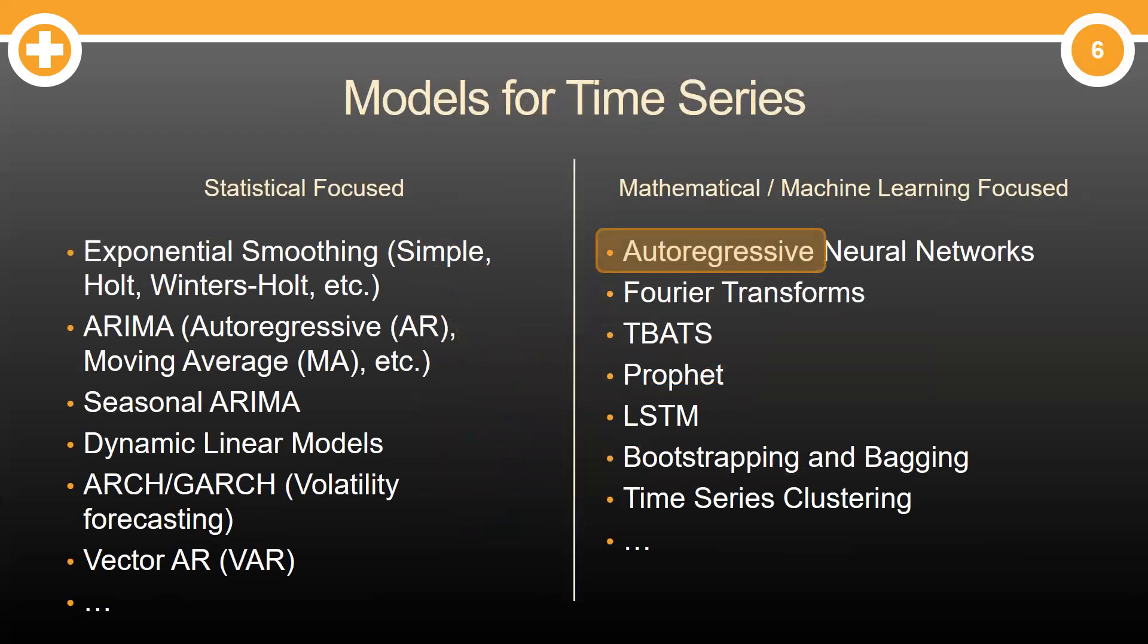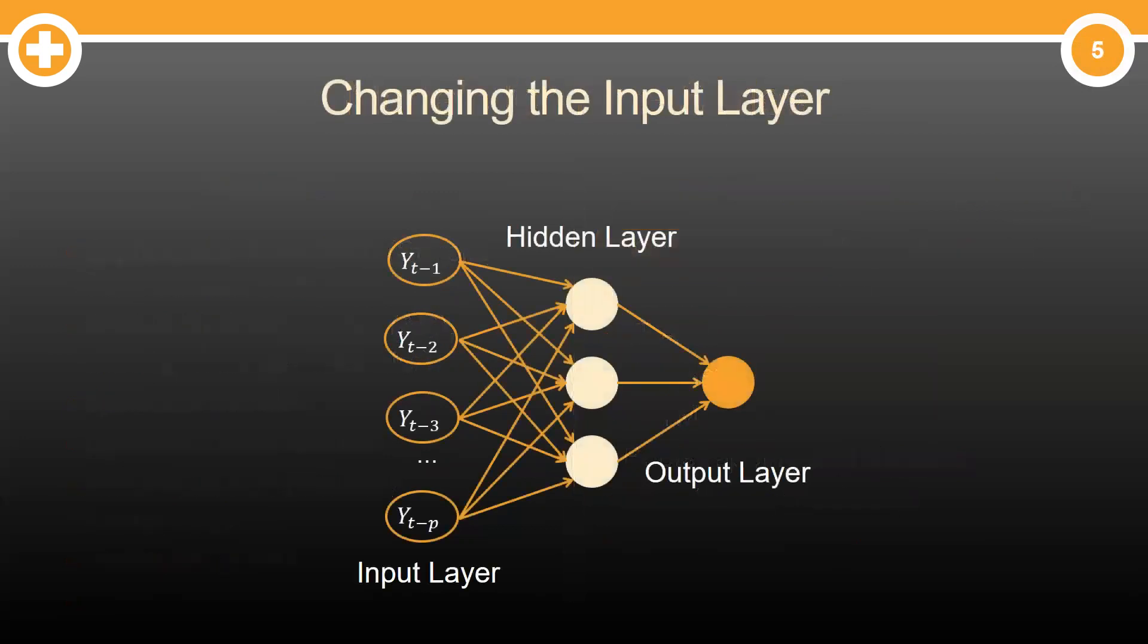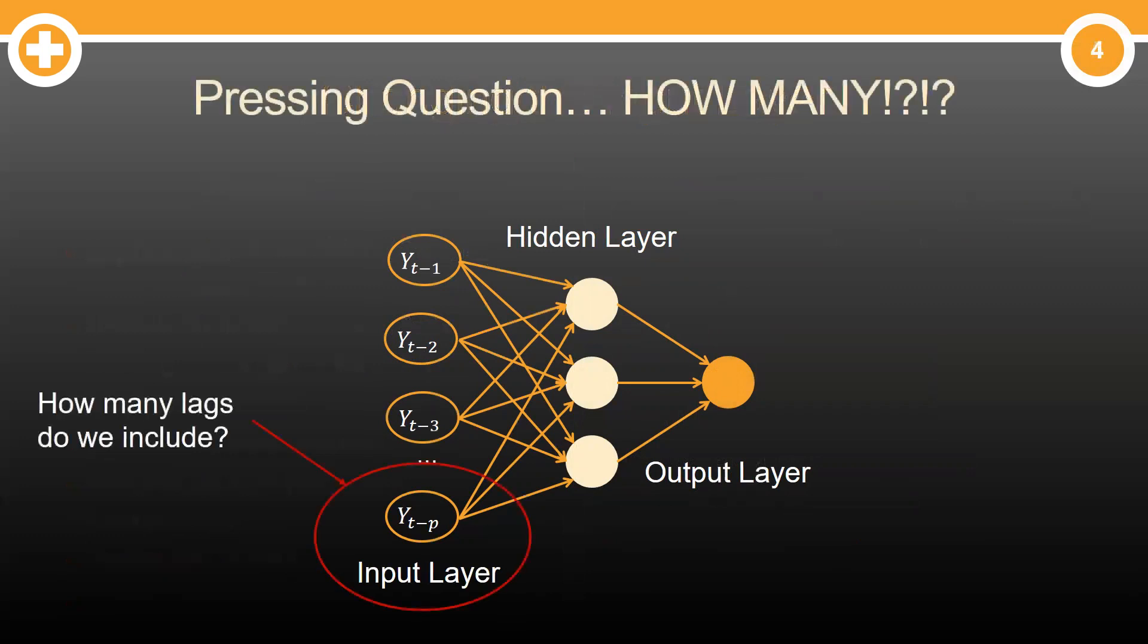But where does the autoregressive part come into play? Well, instead of just thinking of common predictor variables, we can think of the input layer full of lagged values of the target instead. The real question now becomes, how many lags do we put in the model?